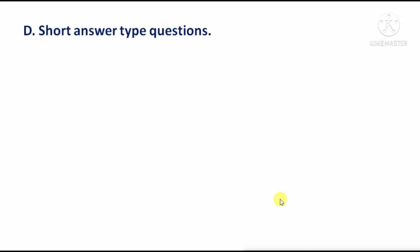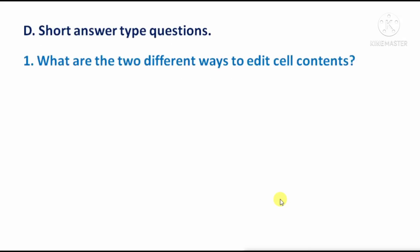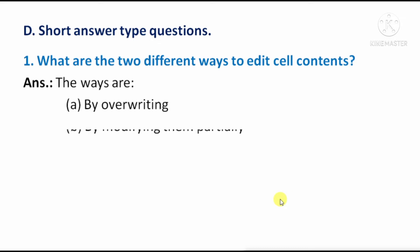Short answer type questions. First question: What are the two different ways to edit cell contents? The first method is by overwriting, and the second method is by modifying them partially — meaning either change the entire content or just a part of it.